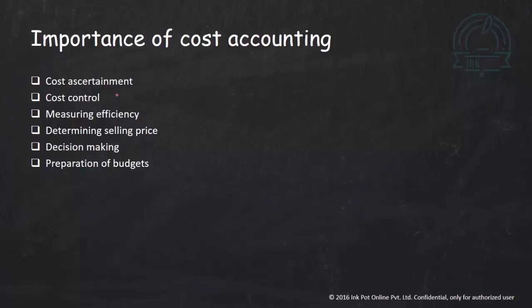This cost controlling further helps in measuring the efficiency of the business. If we have ascertained the cost, we can add a profit margin to determine the selling price. Cost accounting also helps in decision making — for example, whether we should make or buy a product. We compare the cost of making versus buying from an outside supplier and decide accordingly. Preparation of budgets involves preparing predetermined budgets, then comparing actual performance against them to calculate deviations.